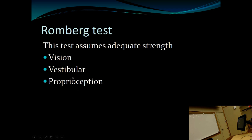The Romberg test assesses balance using vision, vestibular input, and proprioception. Have the patient stand, close their eyes — if they sway and nearly fall, it indicates a vestibular or proprioceptive problem. A patient with vertigo and nystagmus has a vestibular problem; loss of vibration and proprioception on exam places them in the sensory loss category. Many patients with gait problems report falling when they close their eyes in the shower — they essentially performed a Romberg test themselves, helping to narrow down the cause.